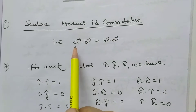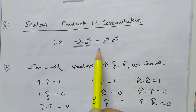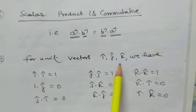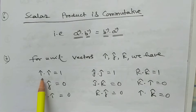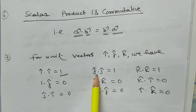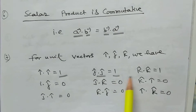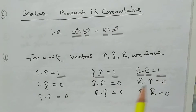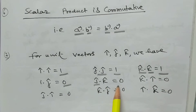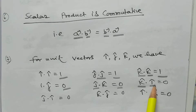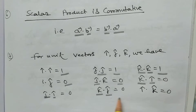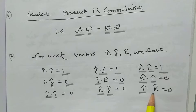Scalar product is commutative: vector A dot vector B equals vector B dot vector A. For unit vectors î, ĵ, k̂, we have: î dot î equals 1, ĵ dot ĵ equals 1, k̂ dot k̂ equals 1, and î dot ĵ, î dot k̂, ĵ dot k̂ are all equal to zero.